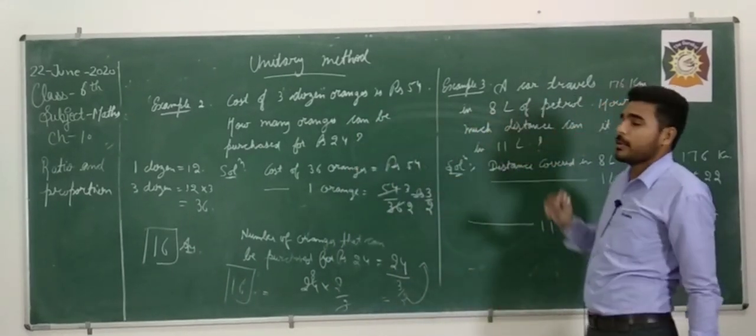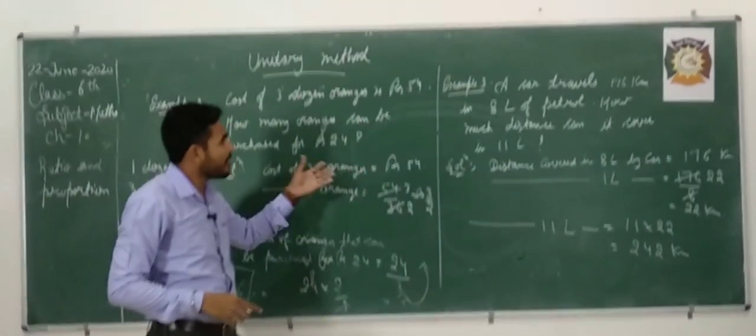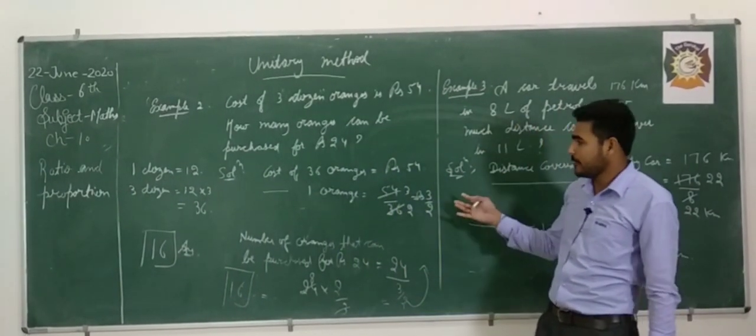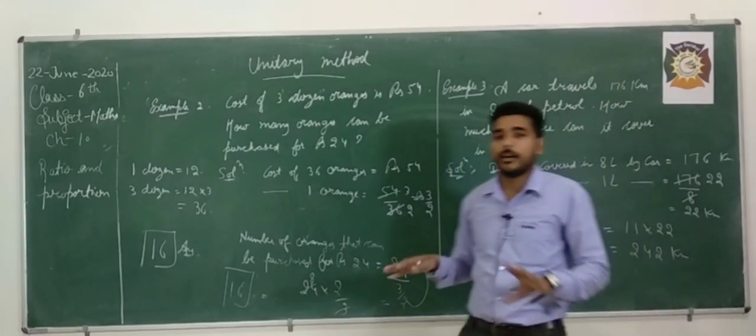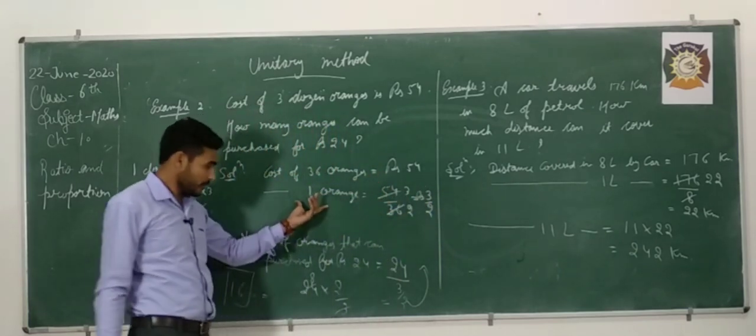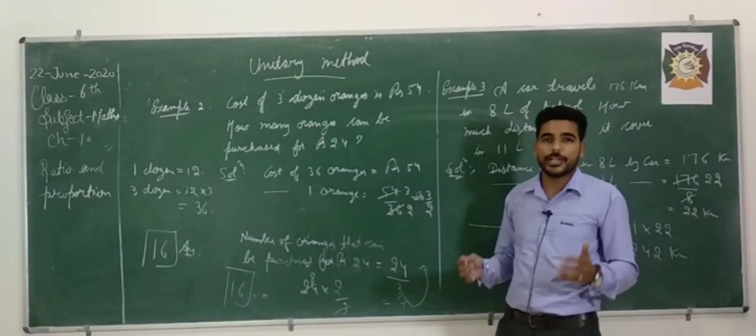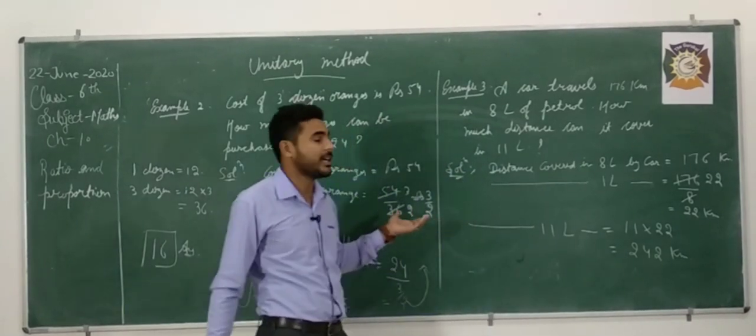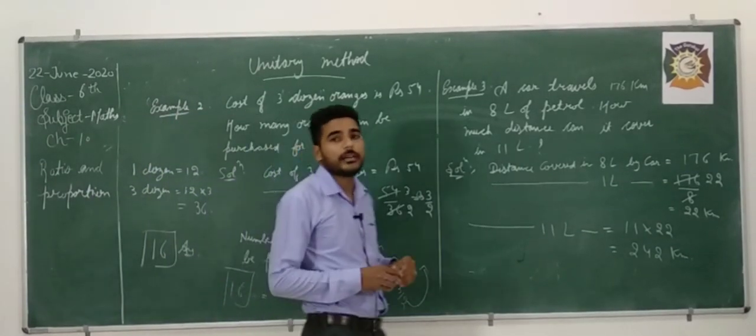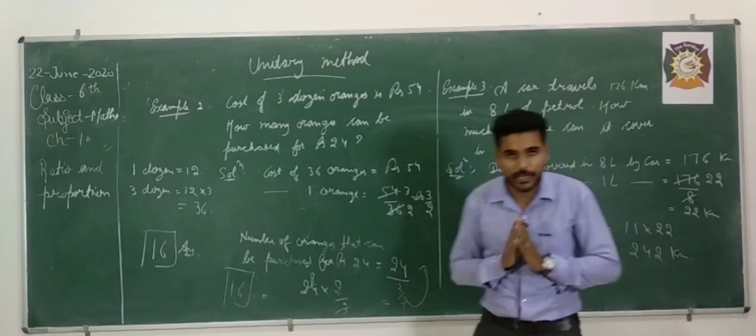These 3 examples are based on the unitary method which we learnt today. On behalf of this topic, you can do the last exercises of this chapter. And finally I am saying that the whole chapter ratio and proportions has completed and after that you have to solve all the exercise and also practice questions which are provided by me in the form of PDF and you send me after doing in the respective groups of mathematics. So for today it is sufficient. Thank you. Have a nice day.